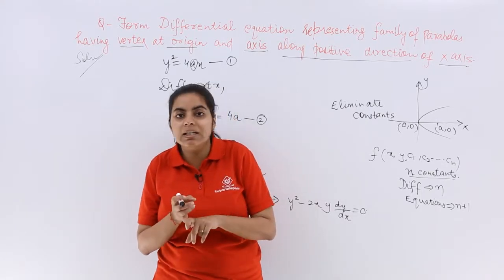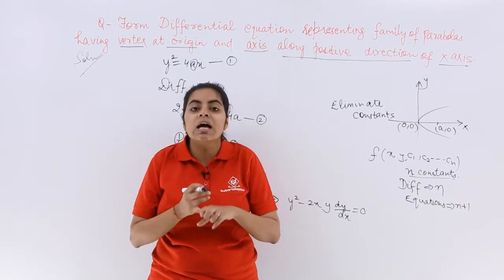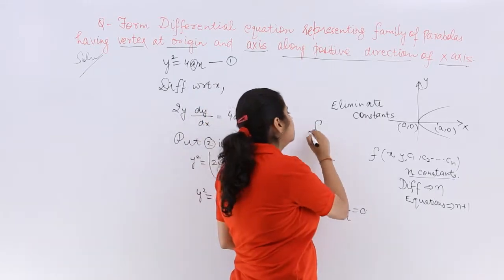So the procedure is that whatever number of constants are there, make a note of it. Accordingly differentiate, you will obtain different equations and the final order